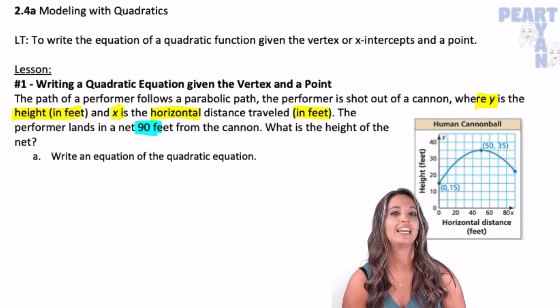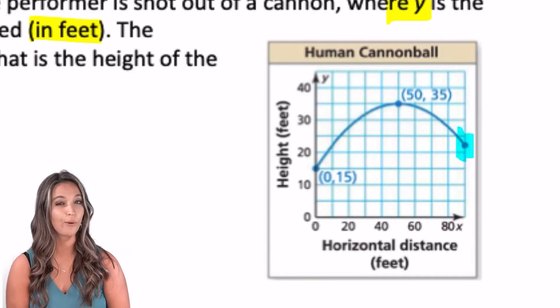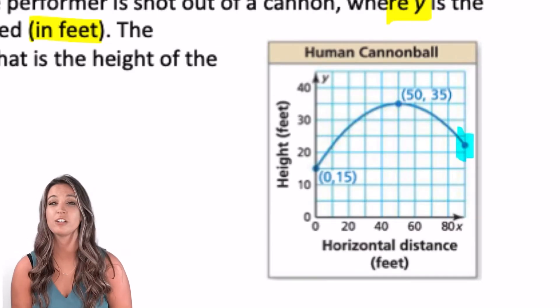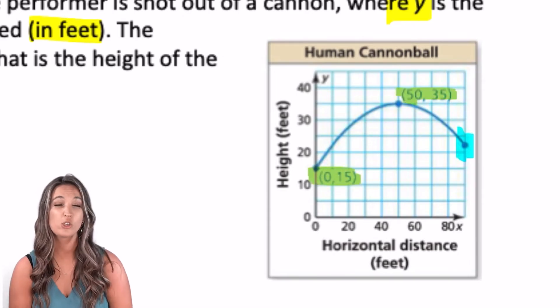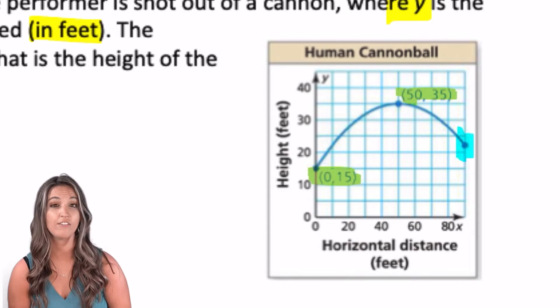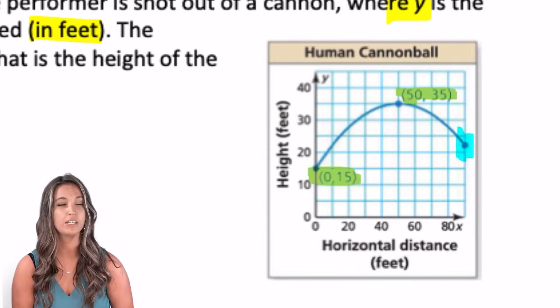We want to find the height of that net. We have a graph of this to the right. It looks like the performer starts 15 feet above the ground and reaches a maximum height of 35. So the vertex is (50, 35) and we have a point, the Y intercept, (0, 15).